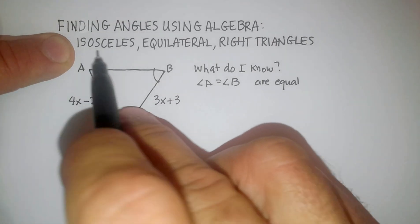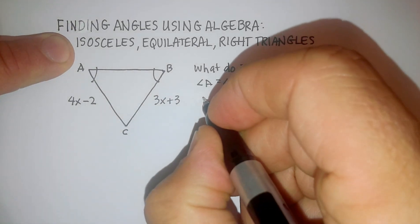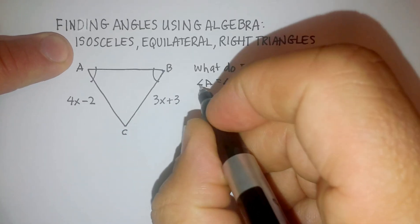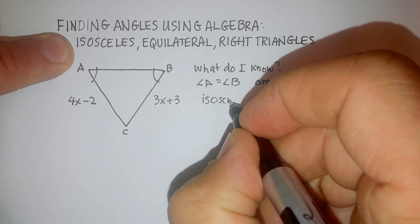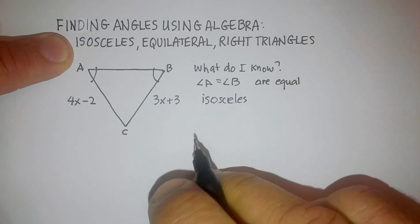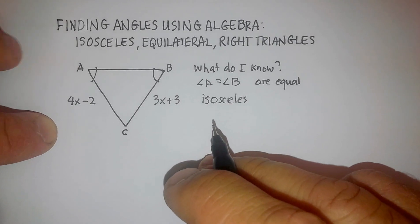But in this case, we only know that two of them are. So we think it's probably an isosceles triangle. So if this is true, then I know that we have an isosceles triangle. Now what do I know about isosceles triangles?